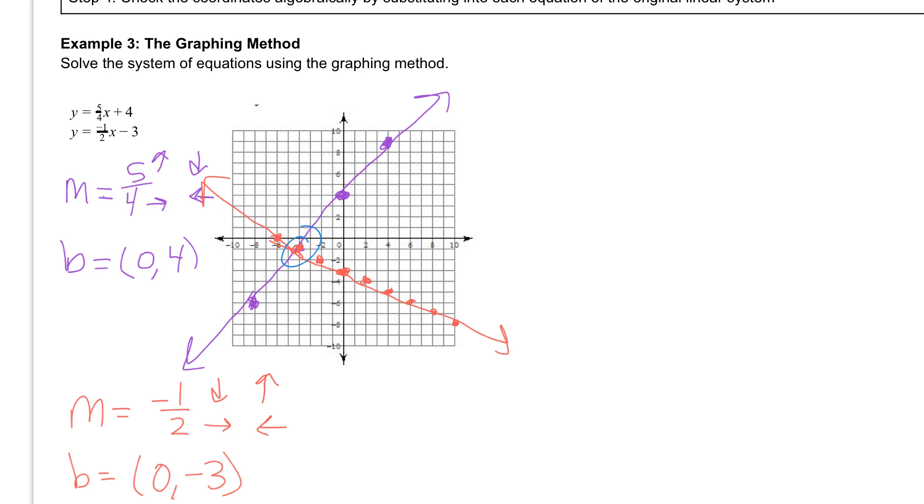And that's the point negative 4, negative 1. So I know my answer is the ordered pair negative 4, negative 1. And then what we want to do is we want to check.